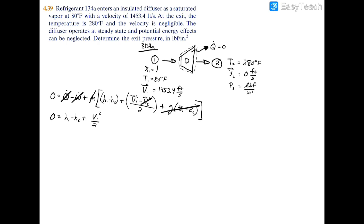Because I have two properties at 1 - the quality X1 equals 1 and temperature of 80 degrees Fahrenheit - we should be able to find H1. We're given velocity at the inlet, so this leaves us with H2. H2 is going to be an unknown property at point 2 at the exit. Once we figure out H2 from this energy balance equation, we'll have temperature of 280 Fahrenheit and H2, which should get us all other parameters such as pressure.